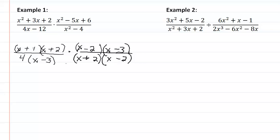Now we're looking for common factors between the top and the bottom. I have x plus 2, x minus 2, x minus 3, and it looks like we're just left with x plus 1 over 4.